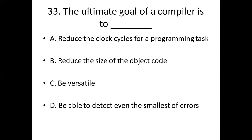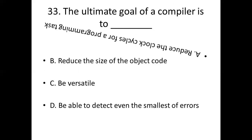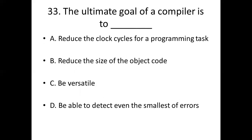Question 33: The ultimate goal of a compiler is to? Option A: reduce the clock cycle for a programming task. Option B: reduce the size of the object code. Option C: be versatile. Option D: be able to detect even the smallest of errors. Answer: Option A — reduce the clock cycle for a programming task.